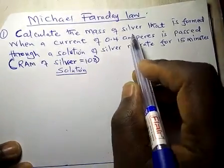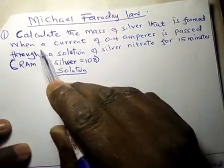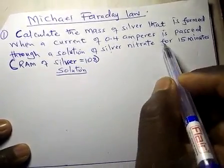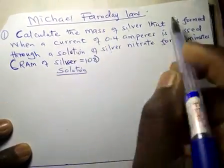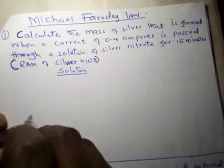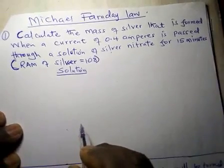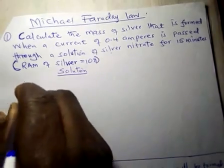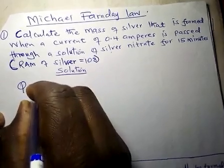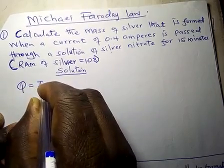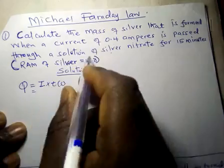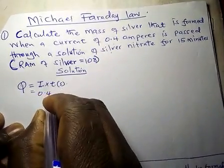Calculate the mass of silver that is formed when a current of 0.4 amperes is passed through a solution of silver nitrate for 15 minutes. First, we calculate the quantity of electricity passed through. Quantity of electricity is equal to current I times time, and this time must be in seconds. Current here is 0.4 amperes.